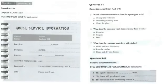Test 6. You will hear a number of different recordings and you will have to answer questions on what you hear. There will be time for you to read the instructions and questions and you will have a chance to check your work. All the recordings will be played once only. The test is in four sections. At the end of the test you will be given ten minutes to transfer your answers to an answer sheet.